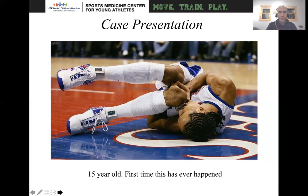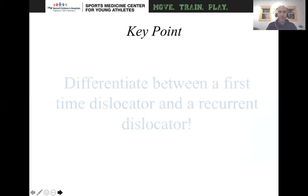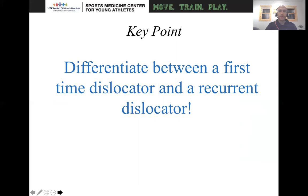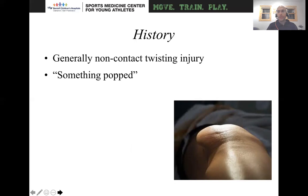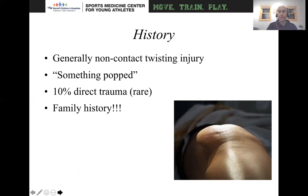Here is a case presentation: a 15-year-old male with his first-time dislocation. The key point is that when an individual comes into your clinic, you want to differentiate whether this is a first-time dislocator, recurrent dislocator, or someone who's been chronically subluxing. In terms of history, these are generally non-contact twisting injuries. Typically, they'll say that something popped. Ten percent is direct trauma — it's extremely rare. Typically it's non-contact mechanisms. You want to look for family history.